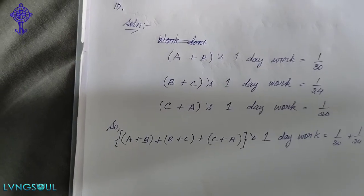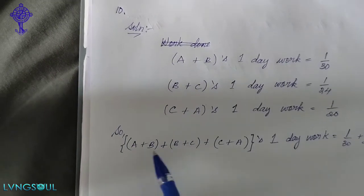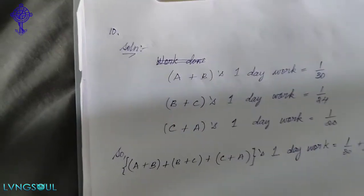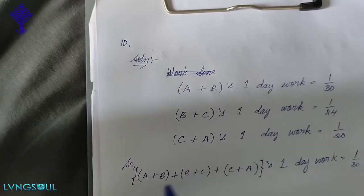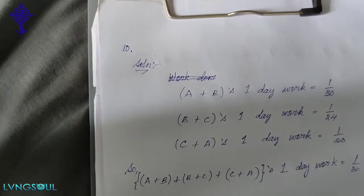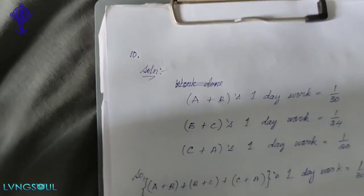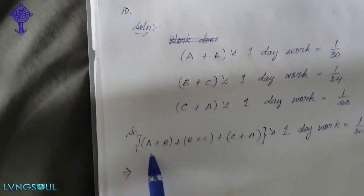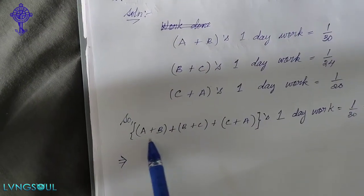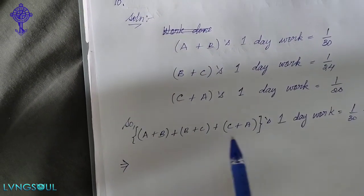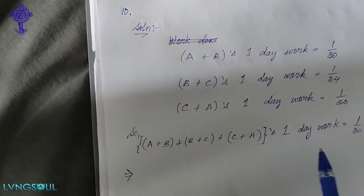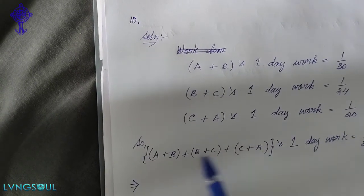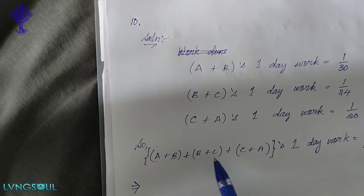A plus B plus C. They all work together. 1 day work equals 1 by 30 plus 1 by 24 plus 1 by 20. That's how you can use algebra. If A, B, C all work together.